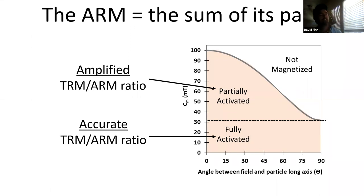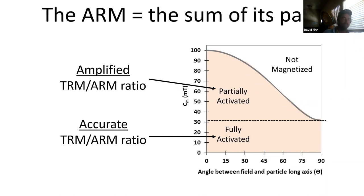You can see the region of the ARM that gives you an accurate TRM ratio versus one that gives an amplified ratio. This ARM as a whole would be considered partially activating and would yield an amplified ratio prior to demagnetization. I should point out that unless you had some extreme coercivity distribution, this switching field property wouldn't come close to reducing that ratio from 10 down to 1, so while it is a factor, there are obviously other things that need considering.